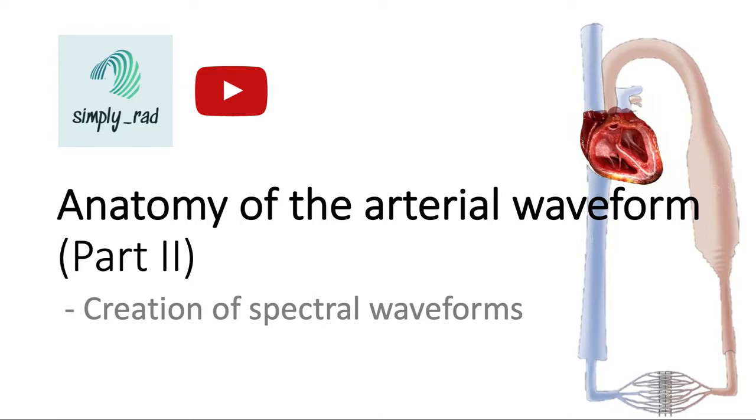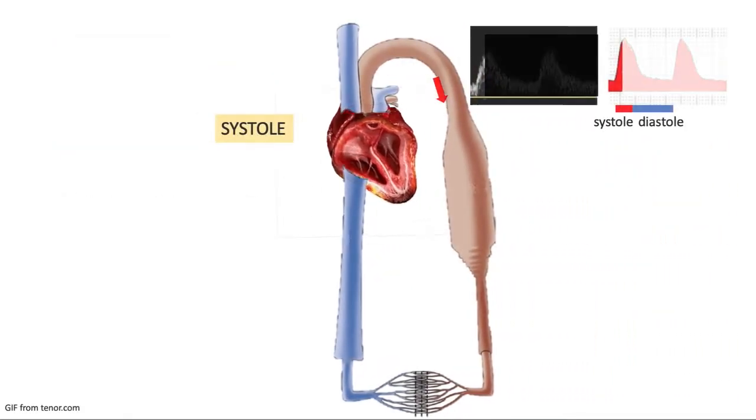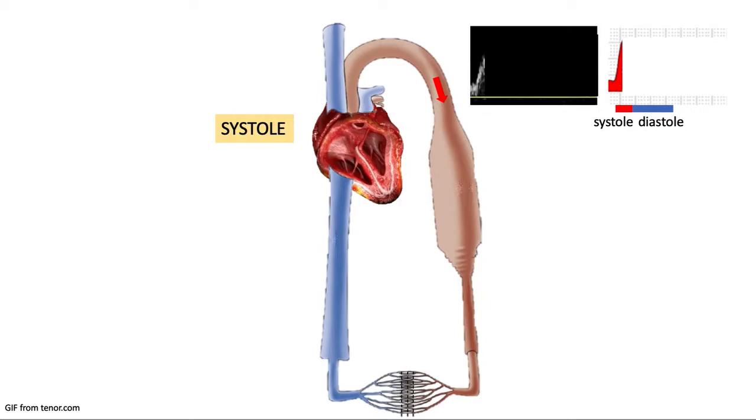The waveforms that we see on spectral Doppler are actually a story of the blood flow. As the ventricle would contract, blood would flow through the arteries here.